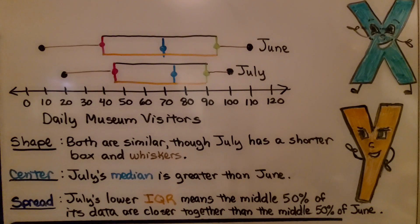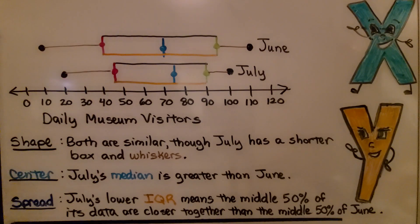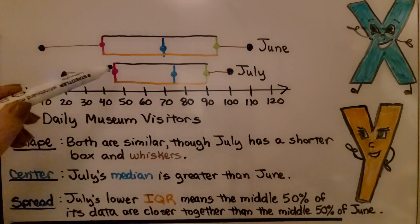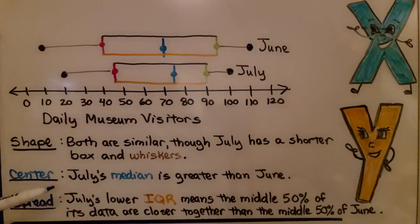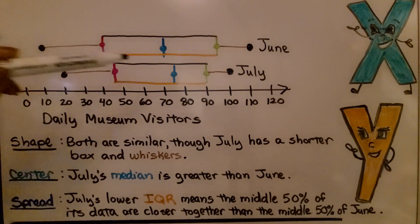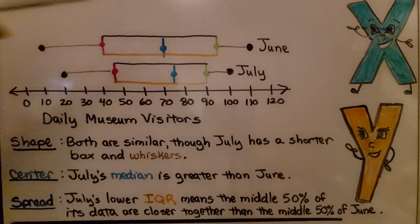Now take a look at these two box plots. It says daily museum visitors and we have for June and July. The shape, well both are similar, though July has shorter box and whiskers. This box is shorter, it's got a lesser IQR, doesn't it? And July's median is greater than June. July's median is over here around 75 and June is around 70.